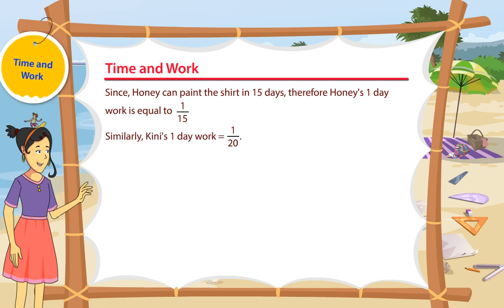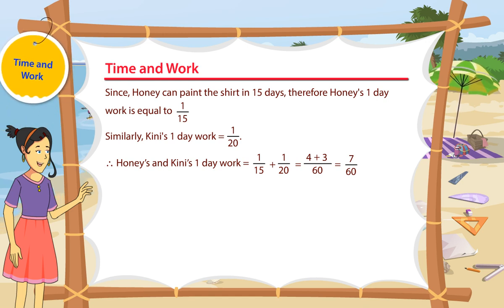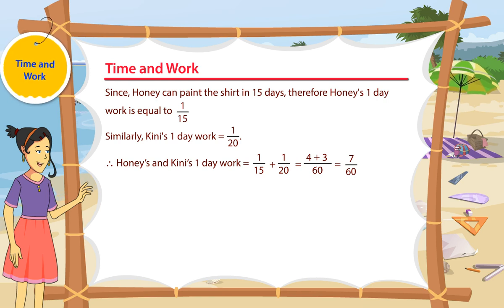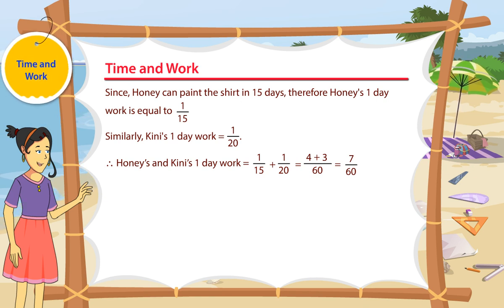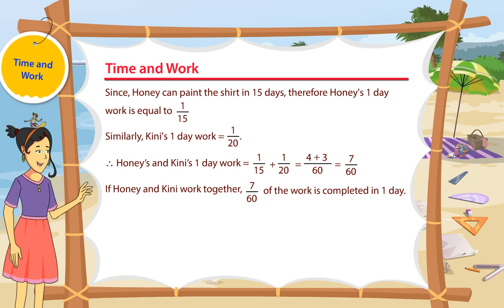Similarly, Kinney's one day work is equal to 1 by 20. Therefore, Honey's and Kinney's one day work is equal to 1 by 15 plus 1 by 20, which is equal to 4 plus 3 by 60, which is equal to 7 by 60. If Honey and Kinney work together, 7 by 60 of the work is completed in 1 day.